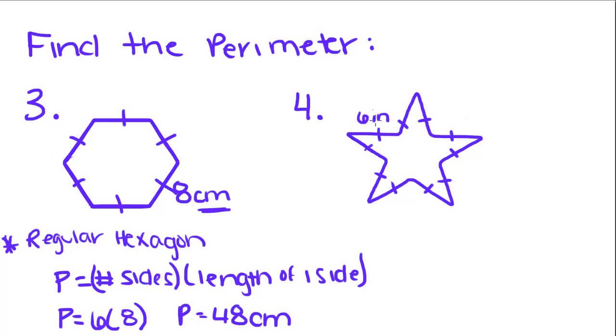We have this star right here. All these little tick marks mean that every single one of these sides are congruent. I'm going to count how many sides we have for this star. We have 1, 2, 3, 4, 5, 6, 7, 8, 9, 10. So, the perimeter of this is equal to the number of sides, times the length of a side. P is equal to 60 inches.